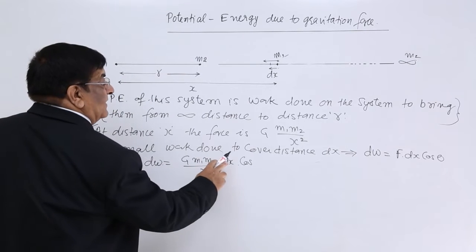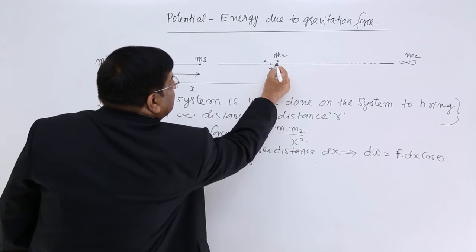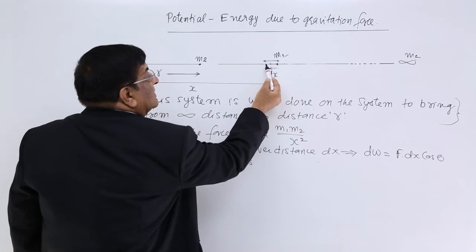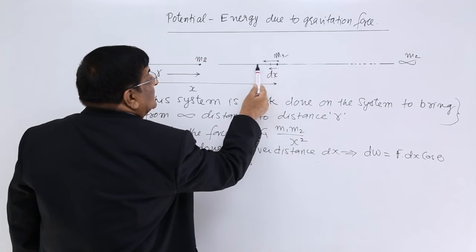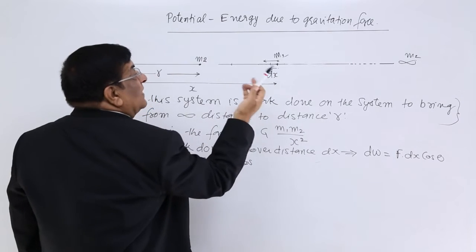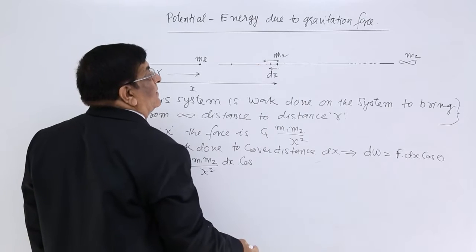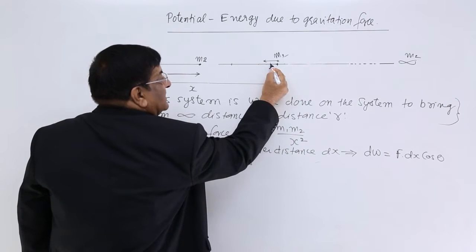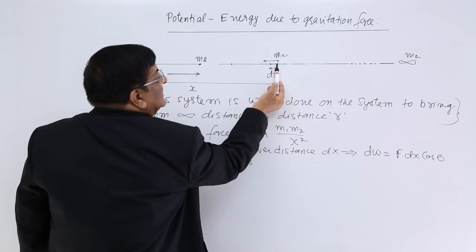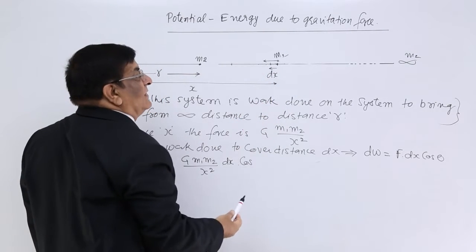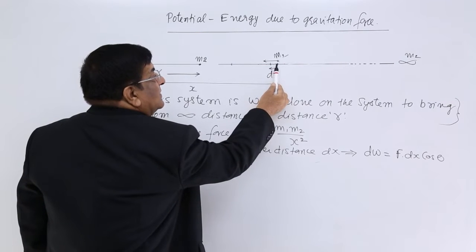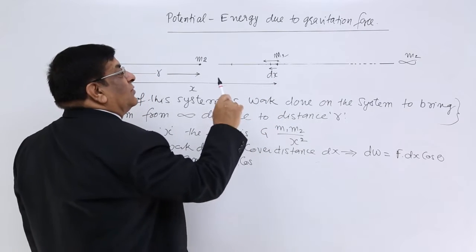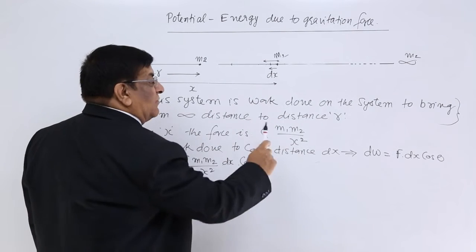A small work done to cover a very small distance dx — why do we do so? Because the force keeps on changing, and we are not allowed to use one value of force for the large distance. But we can think that for a very small distance dx, the value of force is essentially not changing. So that value of force can be multiplied with dx to give the small work done.